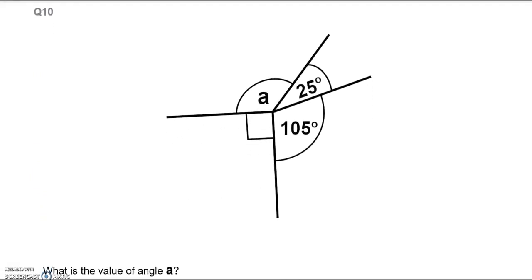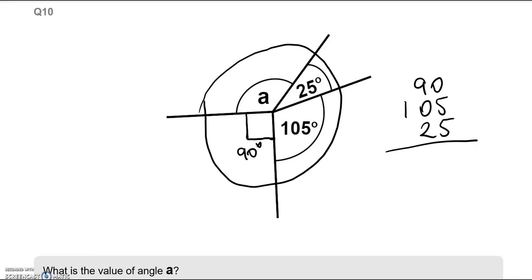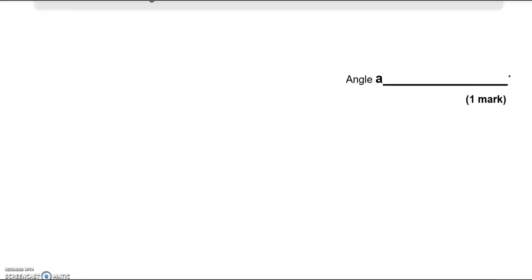Question 10. What's the value of angle A? We know this one here is 90 degrees and we also know that full circle is equal to 360 degrees. So we know that we've got four angles and we know the value of three of them. So we've got 90, 105 and 25. 5 and 5 is 10, 1 and 9 is 10 and the 2 is 12. So 220 we've got and there needs to be 360 in total. So take away 220, 140 degrees. So angle A is equal to 140 degrees.